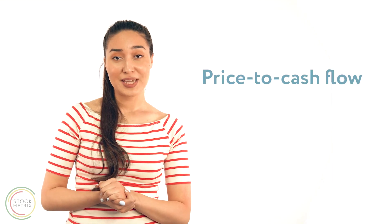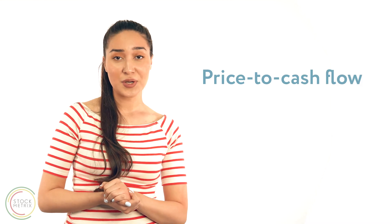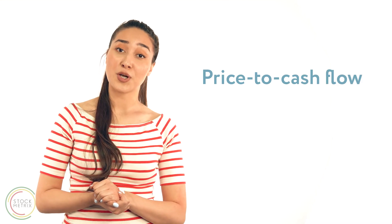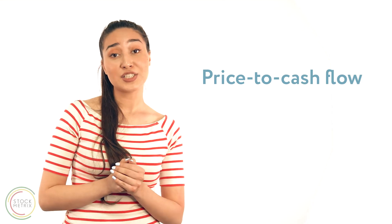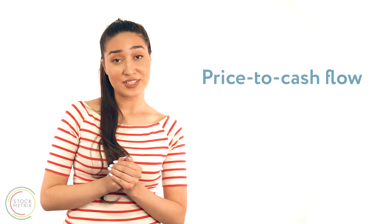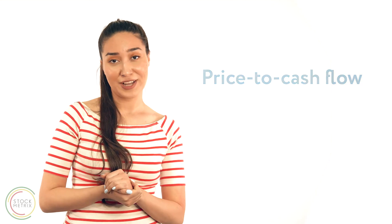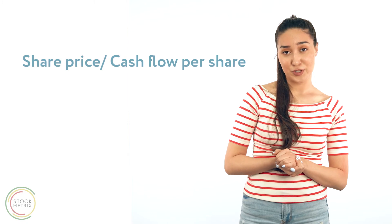The fourth one is the price-to-cash flow ratio. It tells you how much cash the company generates compared to its stock price — or simply, how much investors are willing to pay for every dollar of cash flow. The equation is the current share price divided by the cash flow per share.